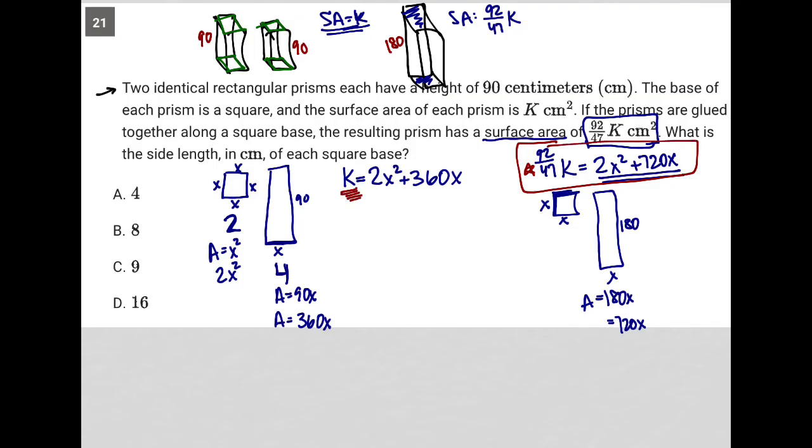So that means I could write out that 92 over 47 times 2x squared plus 360x is equal to 2x squared plus 720x. That is the statement here, replacing this k with what we know k equals.